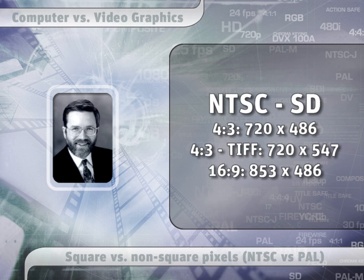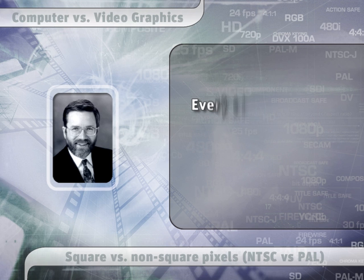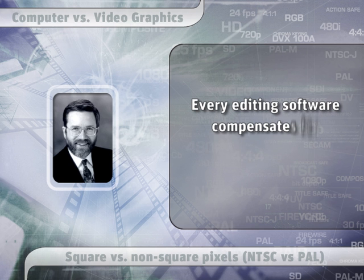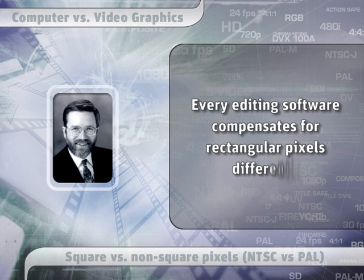There's no way you could remember all of this, which is why I put this table together so you can look at the different numbers. The key thing to keep in mind is to ask your editing software how it compensates for the difference between square computer pixels and rectangular video pixels, because every editing package treats it differently. These are the numbers you need as you build your graphics, so that the circle you create on your computer looks like a circle when you bring it over to video.